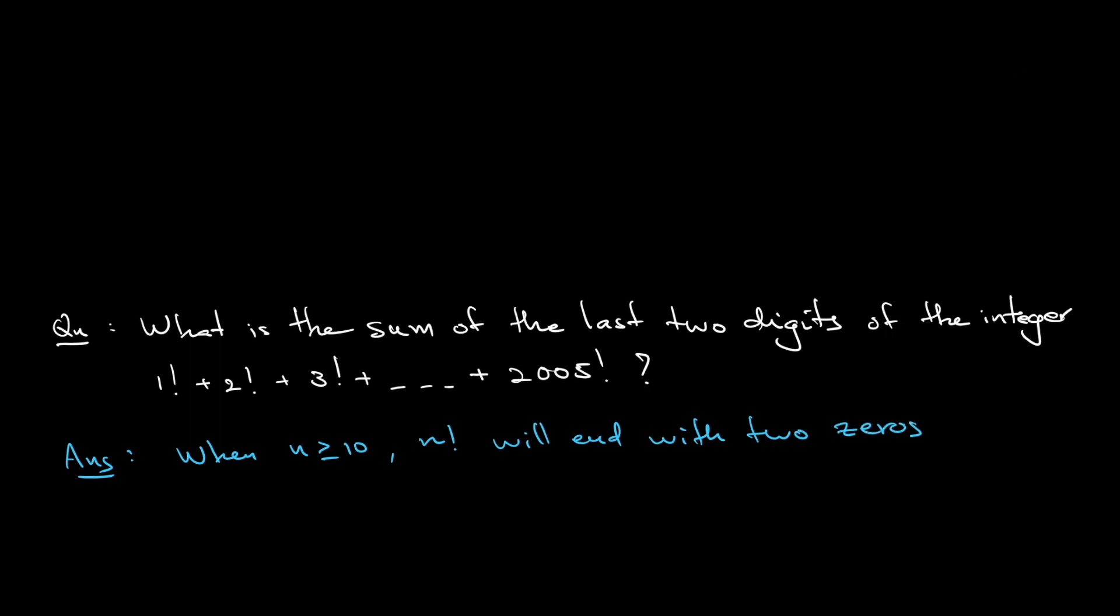Notice that these two zeros will not affect the last two digits of the sum. So if we want to find the last two digits of the integer in the question, all we need to check is the sum of this integer: 1 factorial, 2 factorial, 3 factorial, all the way until 9 factorial.